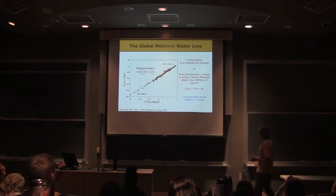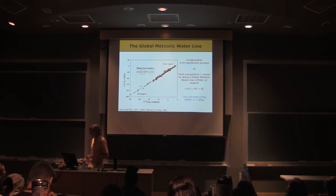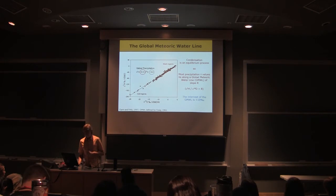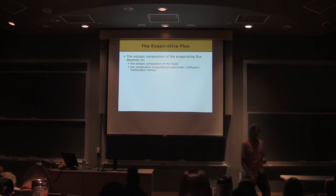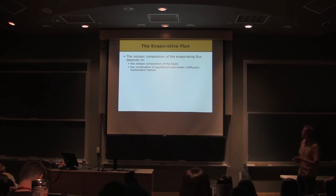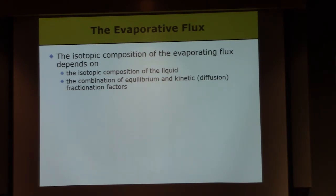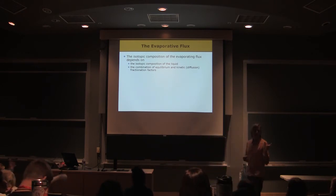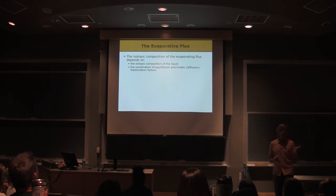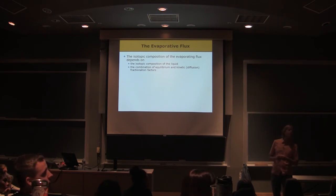So why is the intercept of the global meteoric water line plus 10? Let's think about that a little bit and it'll take us into this third parameter called deuterium excess, which is a very useful one. In order to think about this, we need to come back to our Craig-Gordon model and think about the factors that are going to affect the isotopic composition of the flux of water evaporating from the oceans in particular to the atmosphere. We can think about this in terms of source and process.